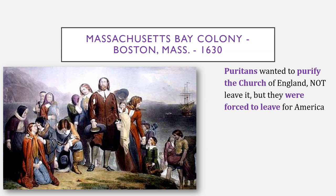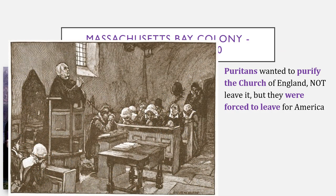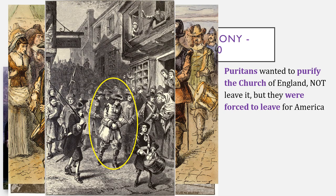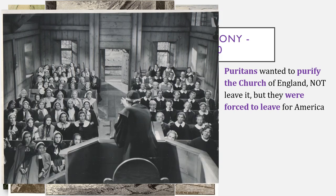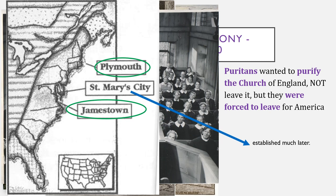The Puritans called themselves that because they wanted to purify the Church of England. You can draw a cross or a church near your notes on Puritans since they are known for their religion. They did not want to leave the Church of England completely like the Pilgrims did, but they were forced to leave for America because they held religious services not approved by the Church of England and the king. The leaders in England threatened to put these people in jail. But the Puritans wanted to worship God the way they believed was right, so they knew about the colonies already established in North America, like Jamestown and Plymouth.